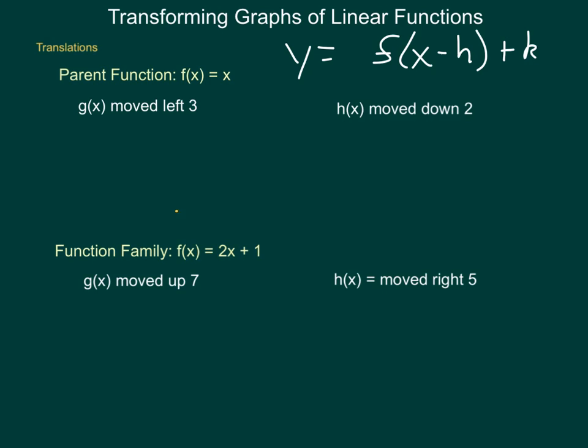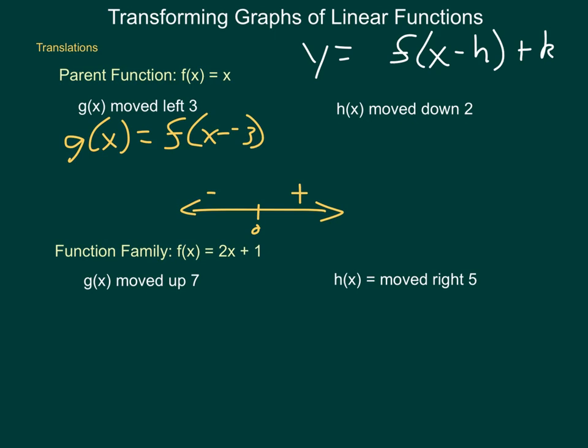So, if g of x is our parent function f of x moved left 3, well, on my number line, if I throw a quick one in here, 0 is in the middle, positives are to the right, negatives are to the left. So, g of x equals f of x. Now, I need to go left 3. So, h is my horizontal movement. As we see up here, it's grouped in with x. So, I'm going to have x minus, and left is negative. So, I'm going to be subtracting a negative 3. If I now simplify this function, considering f of x is simply x, I get g of x is equal to x minus a negative 3 is x plus 3. This will move my function left 3 in graphing.